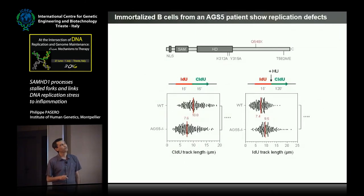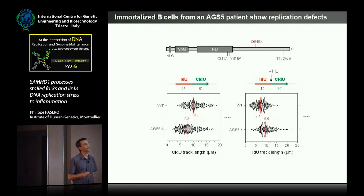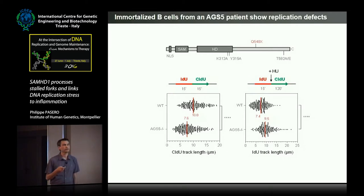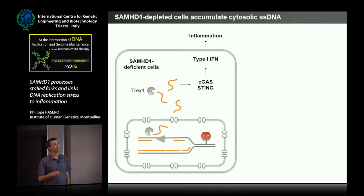What we did first was to analyze replication in B cells from an AGS patient with a mutation in SAMHD1 that does not affect the dNTPase activity. We found that very much like in our cell line models, there is a slower fork progression and decreased processing of arrested forks in the cells from this patient. Of course, it doesn't tell us the link to interferon.